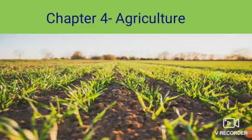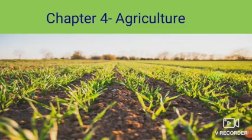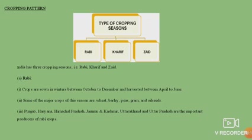Hello and welcome to the geography class. In this video I will be continuing with Chapter 4, that is Agriculture of Class 10th Geography. We will be discussing about the types of cropping seasons in India. There are three cropping seasons: Rabi, Kharif and Zaid.